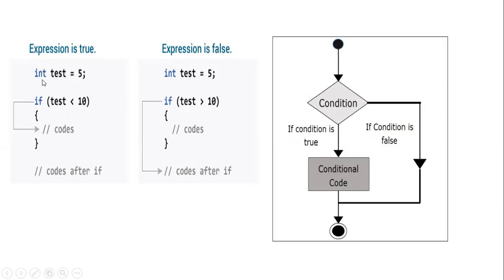You can see the examples here — they have mentioned examples for a true condition and a false condition. For 5 is less than 10, that is a true expression, so control enters into the body. For the false expression, 5 is greater than 10, that is a false expression, so it does not enter the body — it comes out directly and exits. This is for a false expression.